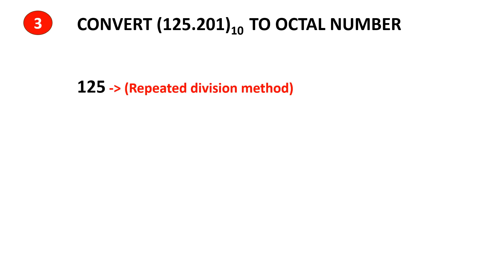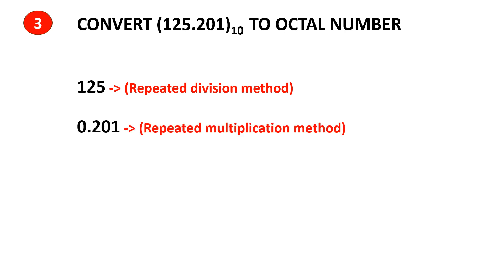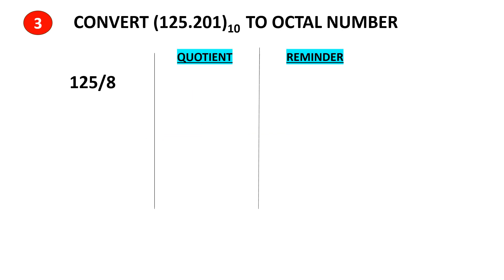Problem 3: convert the decimal number 125.201 to an octal number. First we take 125 and apply the repeated division method to get its octal equivalent. Then we take 0.201 and apply the repeated multiplication method. At last we combine both answers to get the final octal number. Divide 125 by 8 and the quotient is 15 and the remainder is 5.